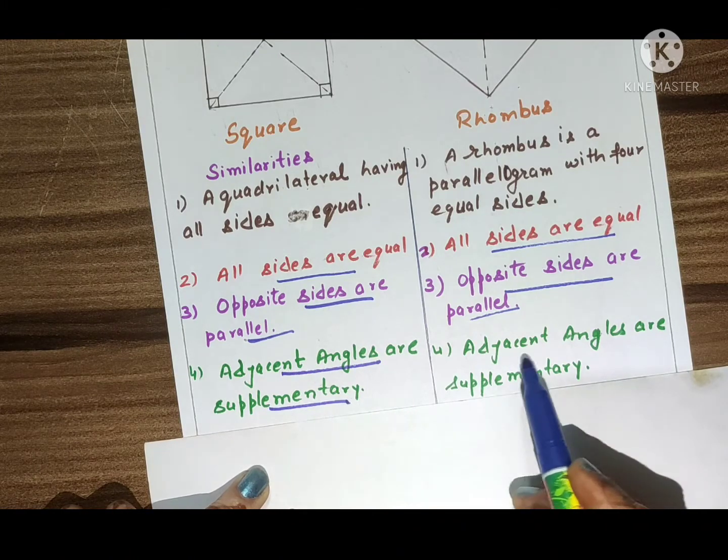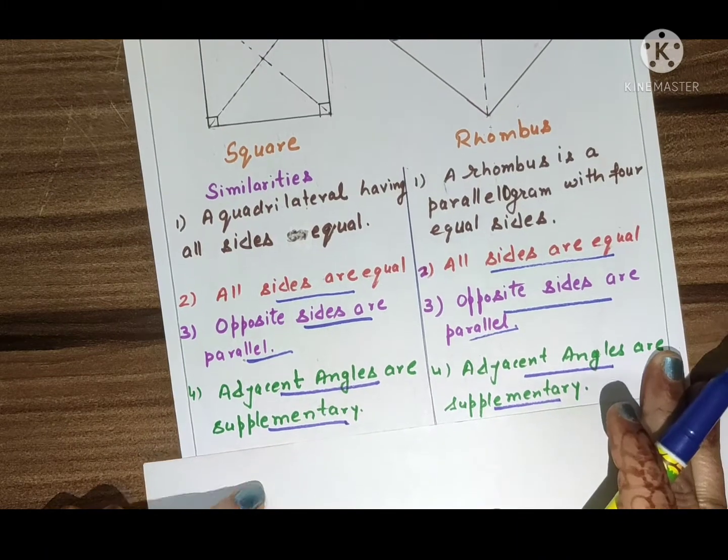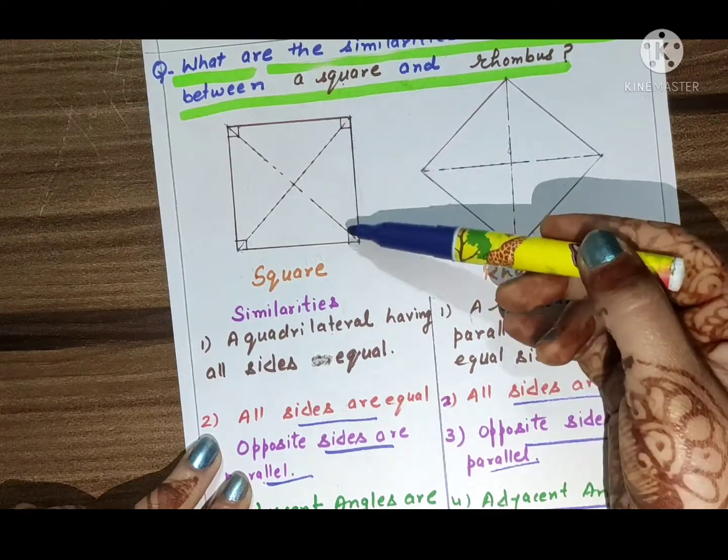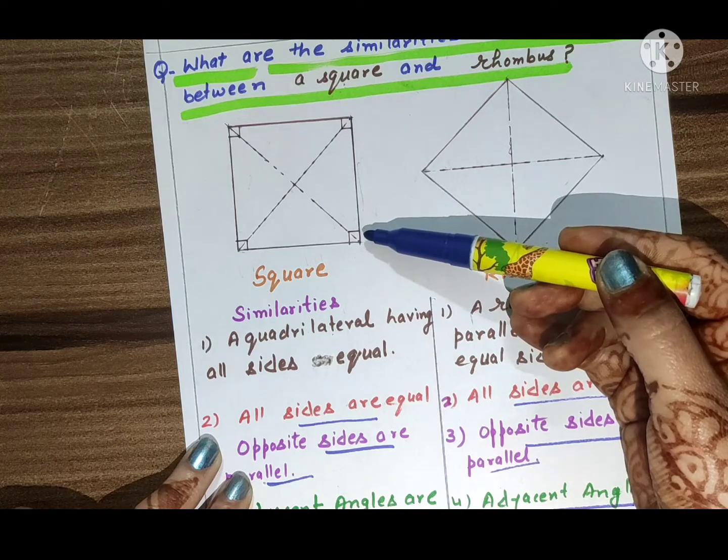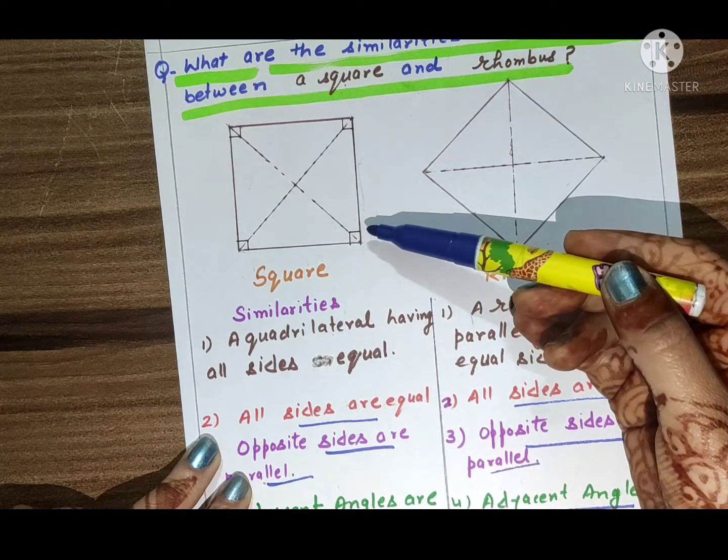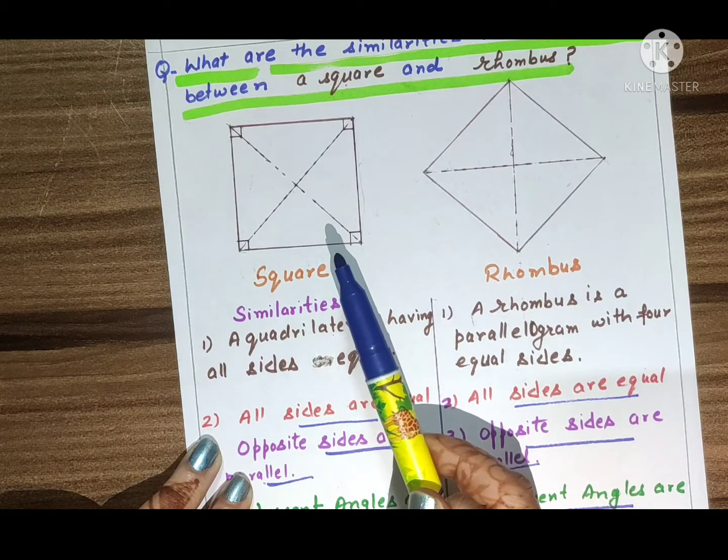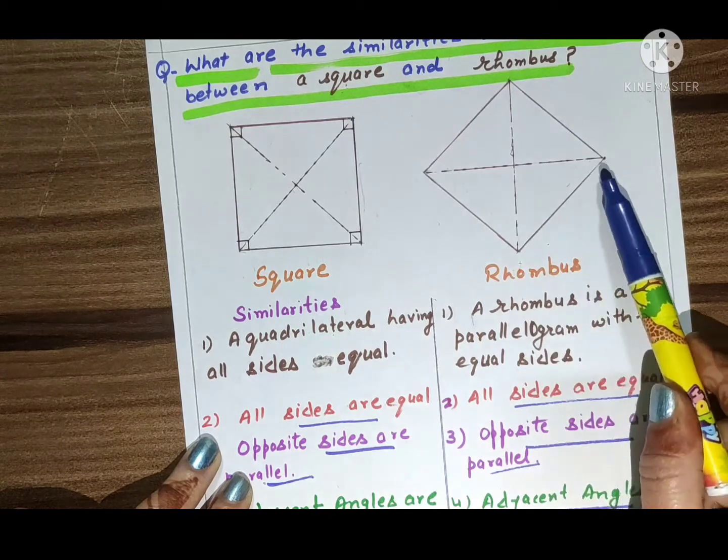Adjacent angles mean these two angles. Supplementary angles are those angles whose sum is 180 degrees. Here the sum of adjacent angles is 180 degrees.